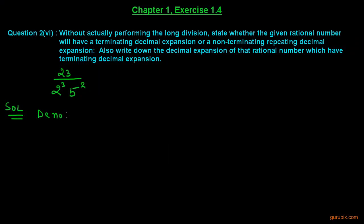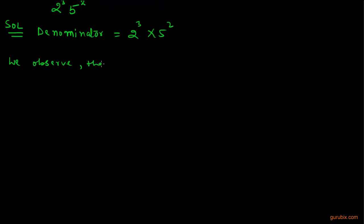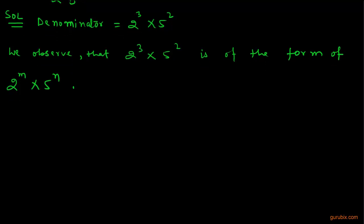Here is the same question once again. The denominator is 2 to the power 3 and 5 to the power 2, and we observe that 2 to the power 3 multiplied by 5 to the power 2 is of the form 2 to the power m multiplied by 5 to the power n, and there are no other prime factors remaining.